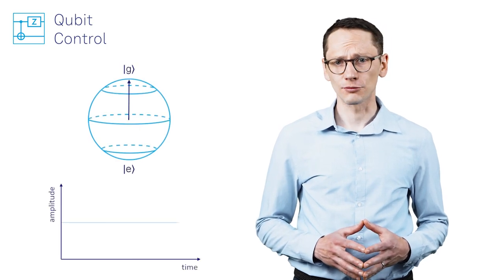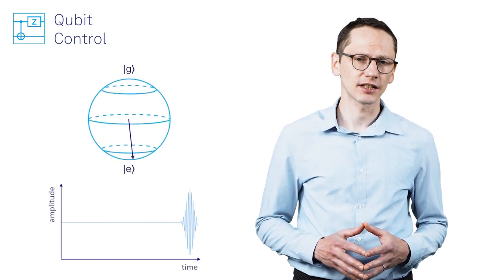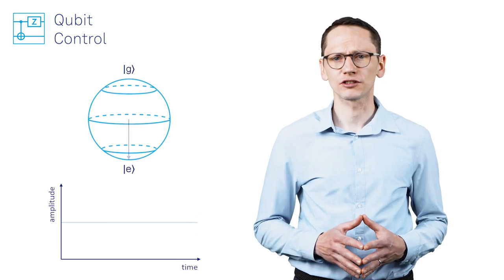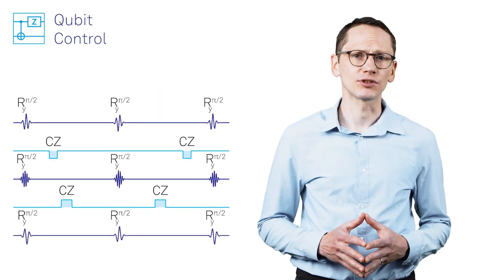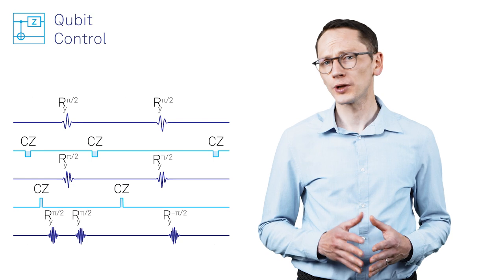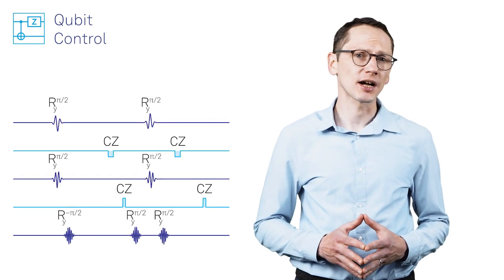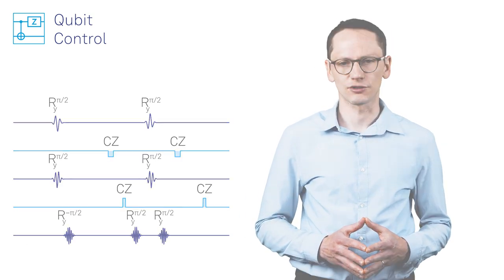When it comes to qubit control, strong analog performance means the highest possible gate fidelities, fast and stable quantum gates. And the pulse sequencing capabilities determine how quickly you can change from one experiment to the next by minimizing data transfer to and from the instruments.